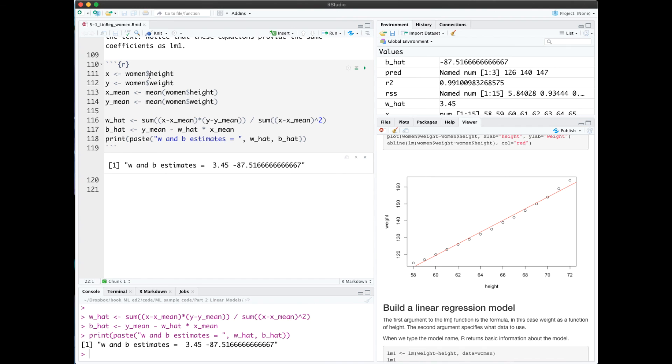So I'm letting x be the women height, this is going to be a vector, and y will be a vector of their weights, and I'm calculating the mean of each of those.